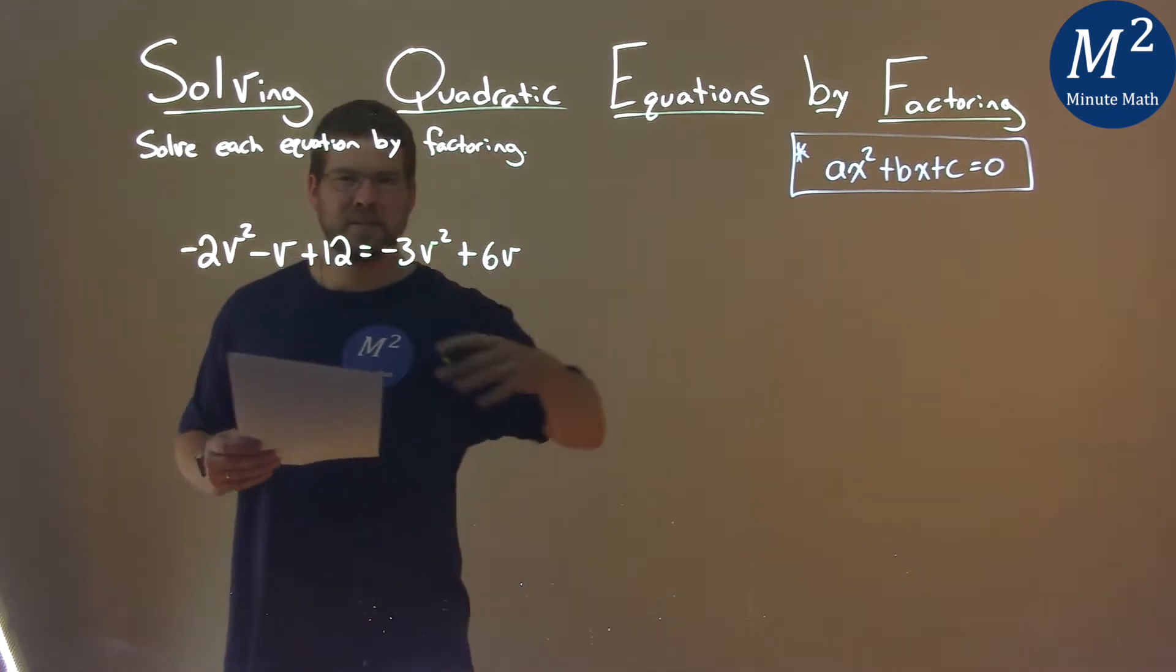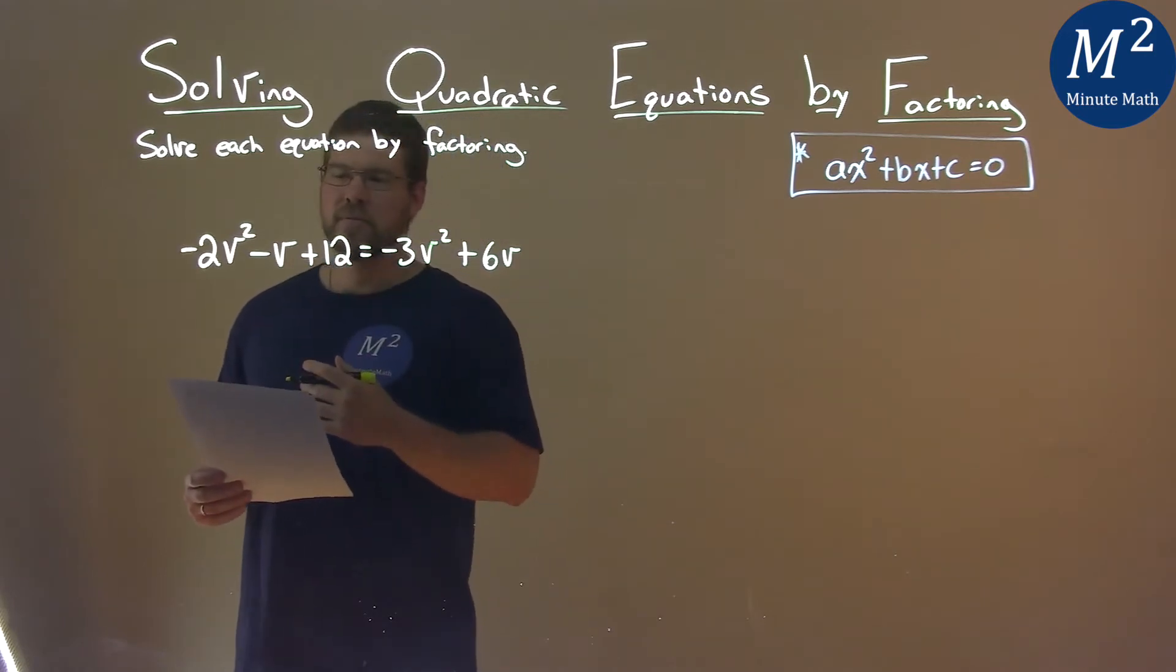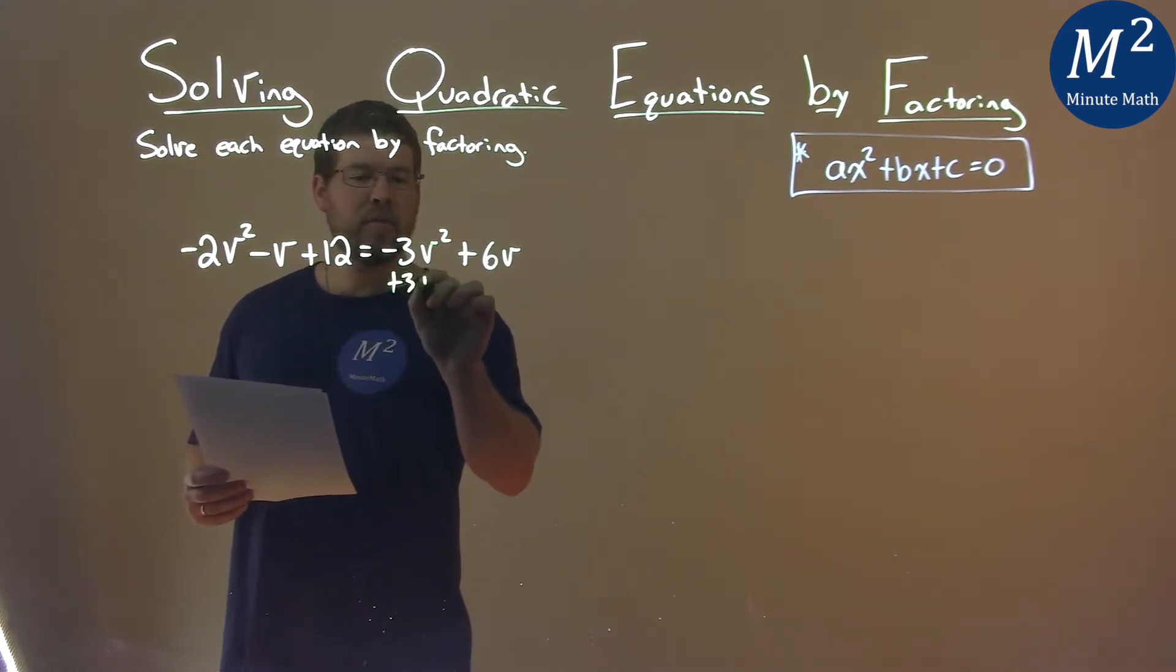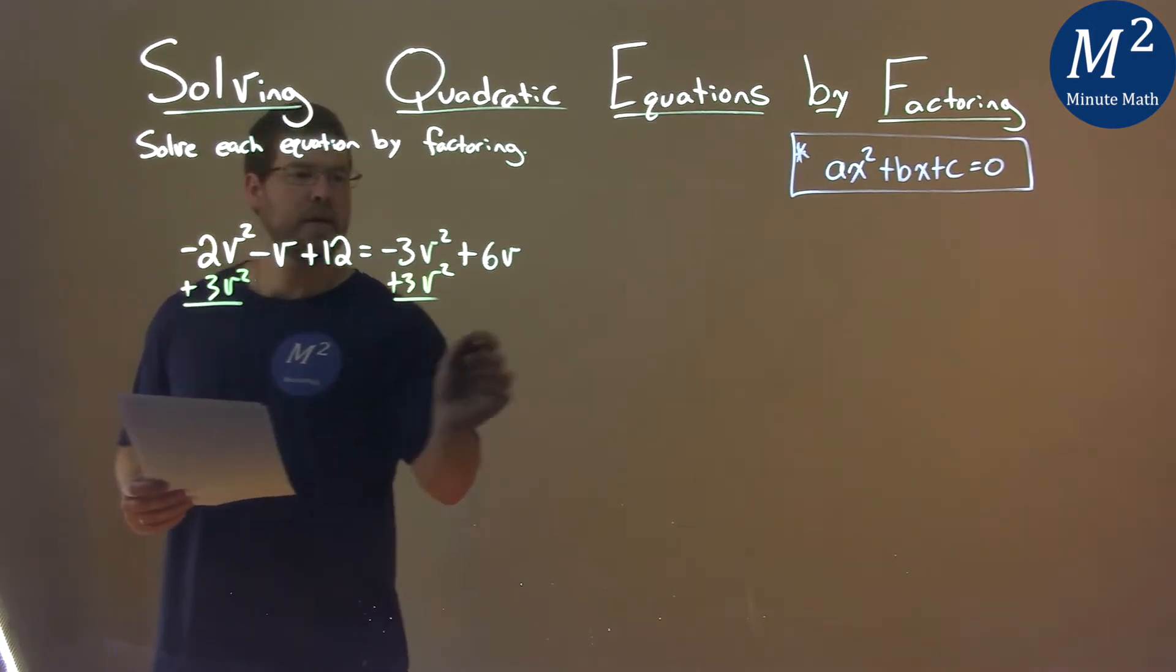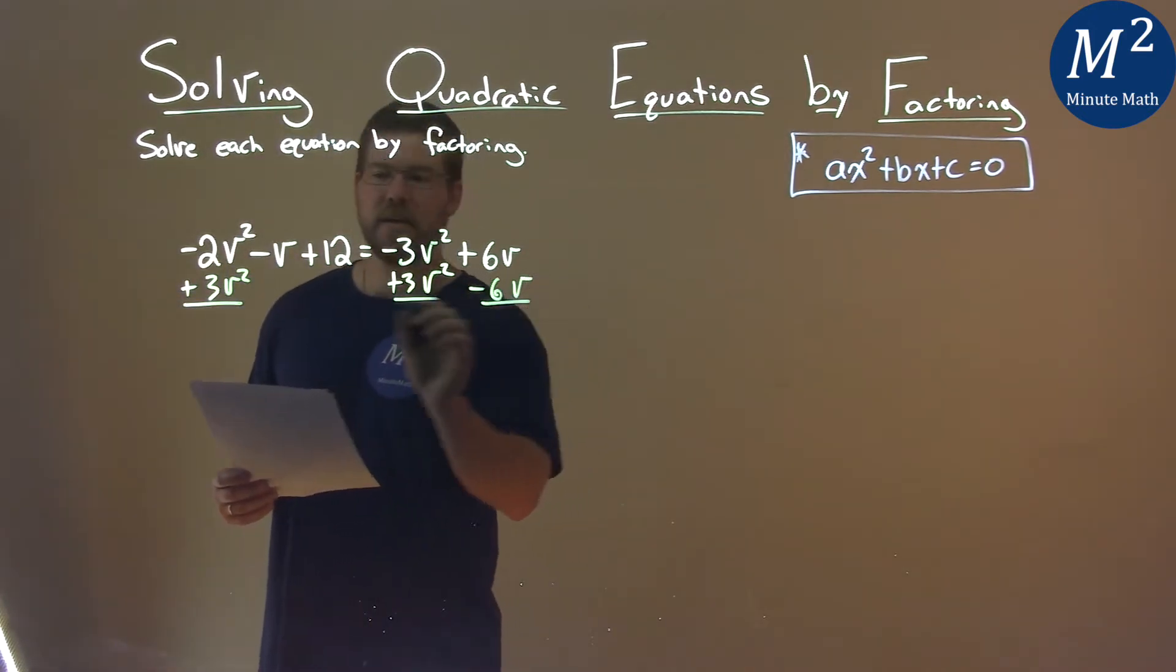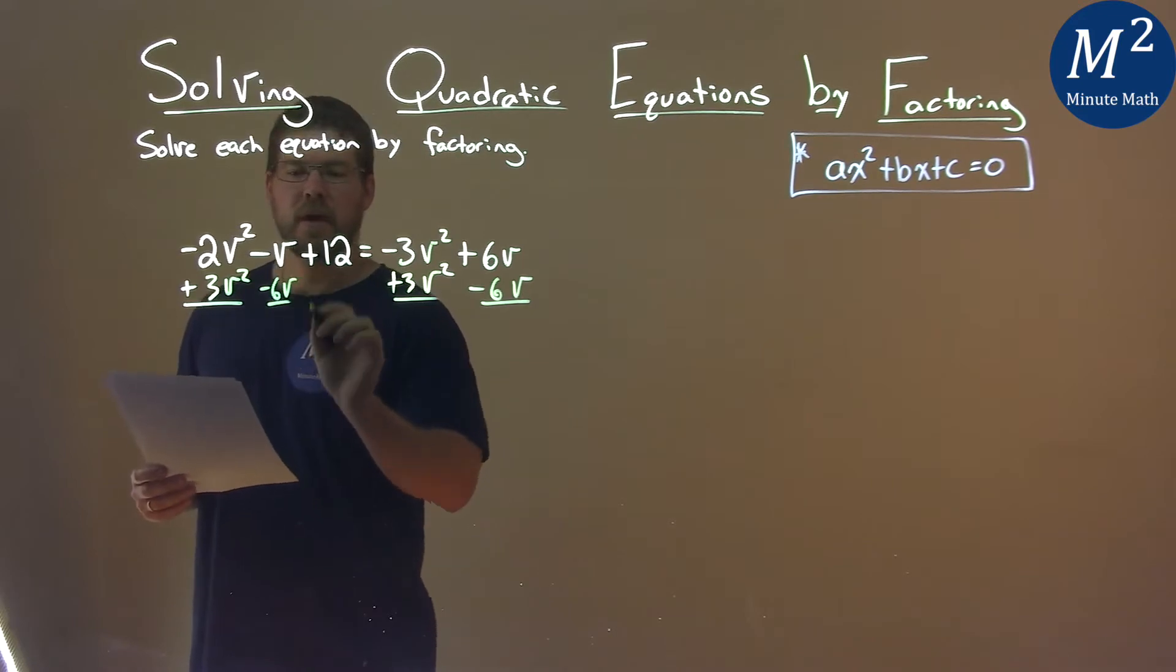First thing, I want to combine my like terms and bring everything over to the left. I'm going to add 3v² to both sides, and also subtract 6v to both sides.